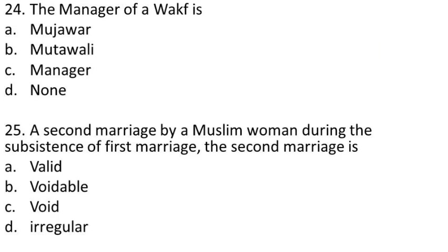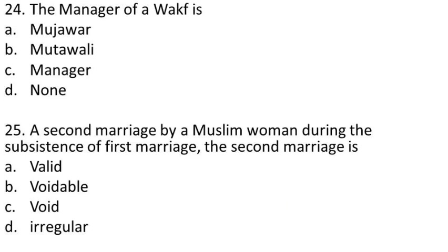Question 25: A second marriage by a Muslim woman during the subsistence of the first marriage — the second marriage is (A) valid, (B) voidable, (C) void, (D) irregular. The answer is C: it is void. Muslim men can marry up to four wives, but a Muslim woman cannot marry more than one husband.